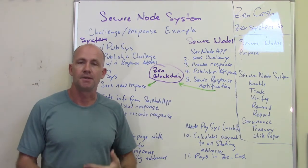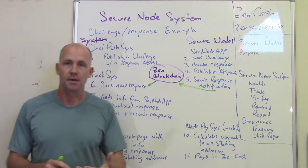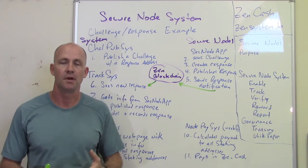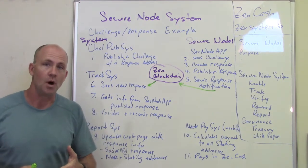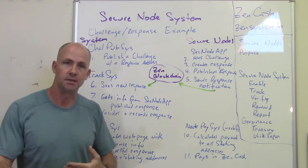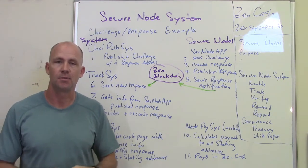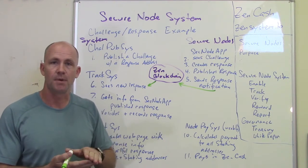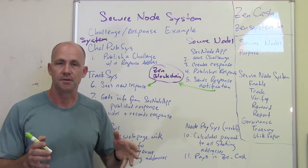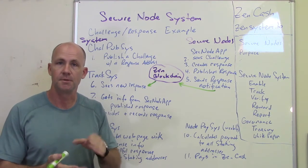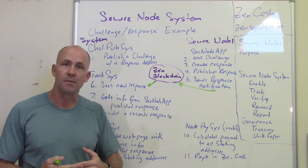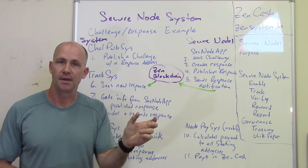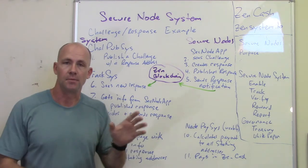So it creates a response, and in that response it has a few different things. It's got the answer. It's got the T address of the secure node itself, which is how we refer to the secure node. It's got the T address of the staking wallet — that staking wallet has at least 42 Zen in it, that's part of the requirement. And then it takes that challenge response and encrypts it with its SSL certificate — it's got the private key of the SSL certificate and encrypts it.